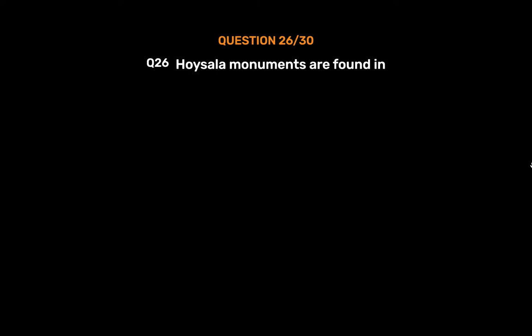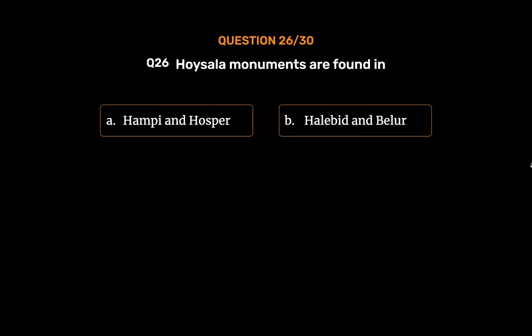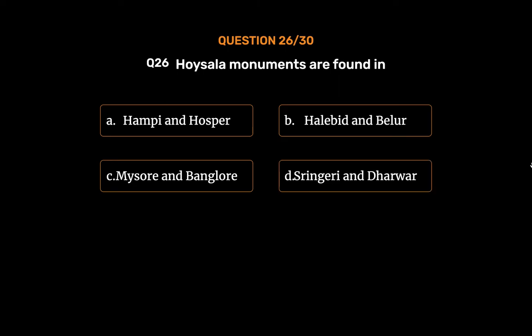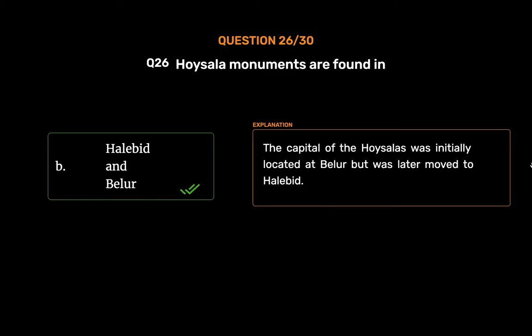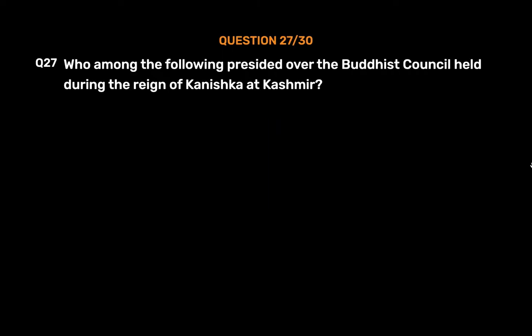Question number twenty-six: Hoysala monuments are found in — Option A: Hampi and Hosapete, Option B: Halebid and Belur, Option C: Mysore and Bangalore, Option D: Sringeri and Dharwad. The correct answer is Option B, Halebid and Belur. The capital of the Hoysalas was initially located at Belur but was later moved to Halebid.